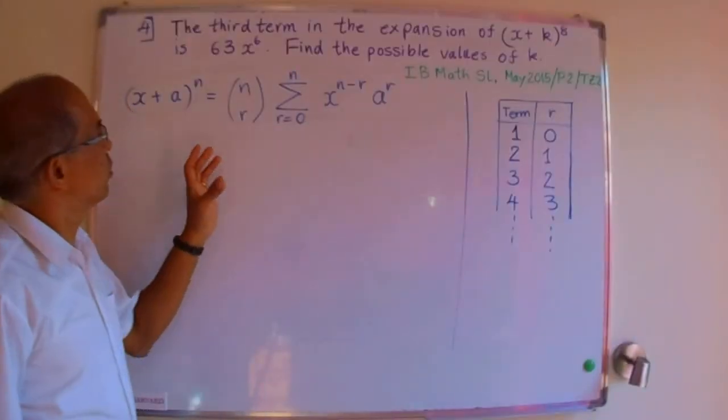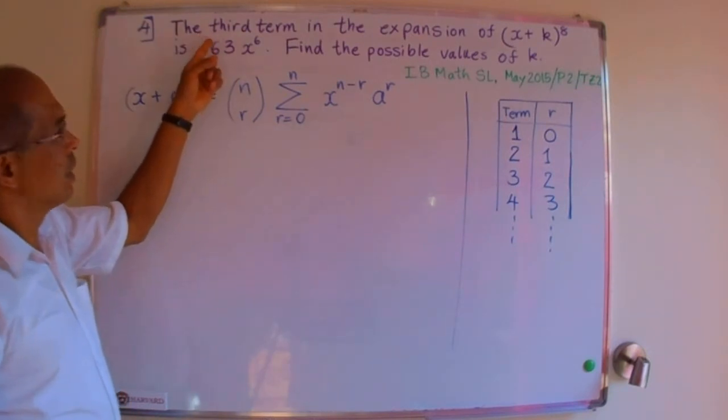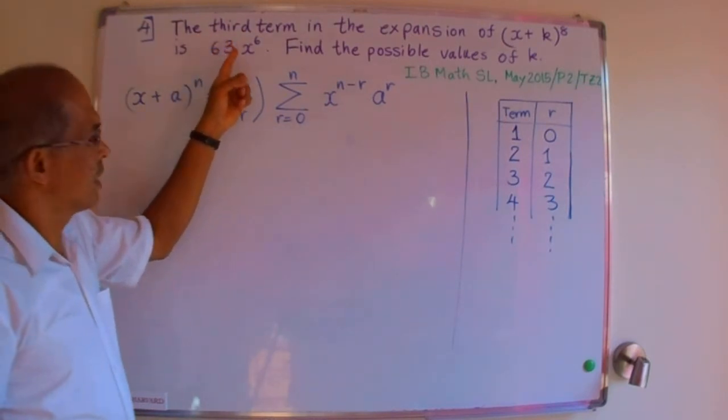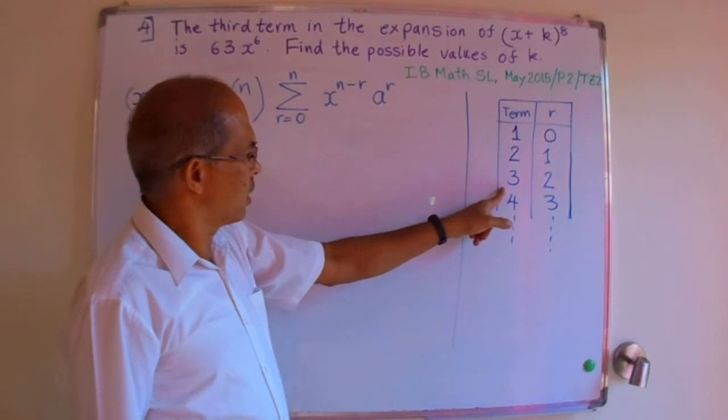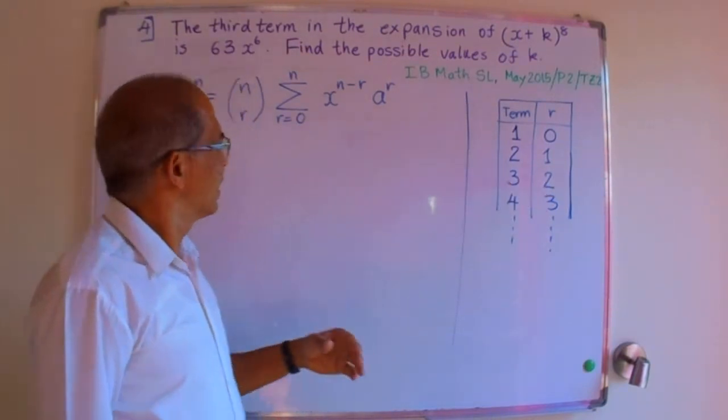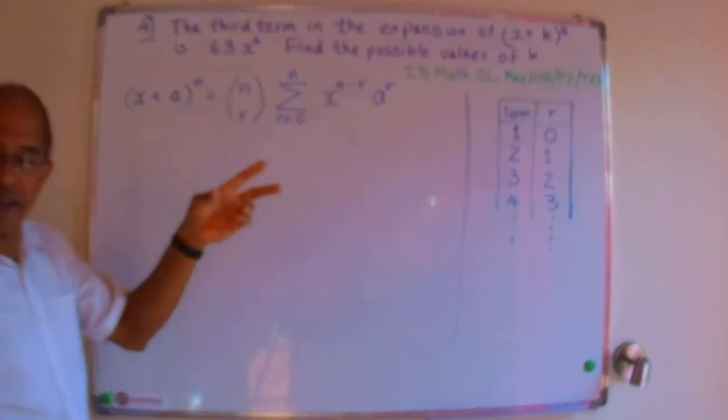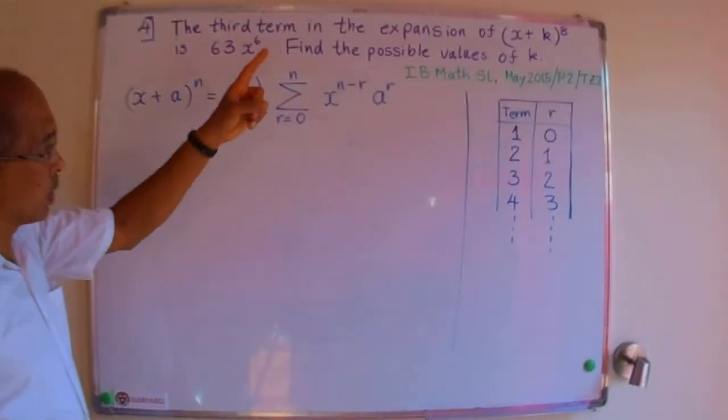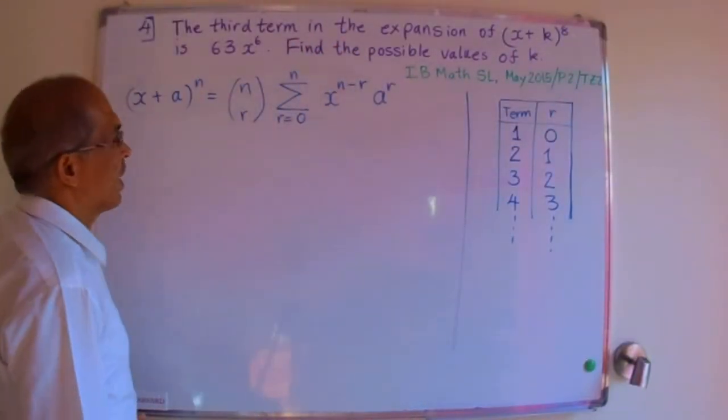Now in this problem, it asks you to find the third term, which means that r for the third term will be 2. So let's use the binomial expansion with r equals 2 and n equals 8, because that's the power, and see what we have.